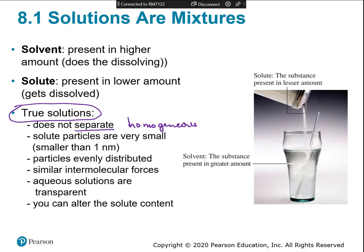In a true solution, everything dissolved is either polar or ionic, so it completely mixes and stays mixed. You can usually see through it — it may have color but is transparent. Think of Gatorade: water with salts, sugars, dyes, and flavorings — all small molecules that stay mixed, looking uniform in the bottle with nothing settling to the bottom. You can also alter how much solute is there — like coffee, where you can add one teaspoon of sugar or four, depending on preference.